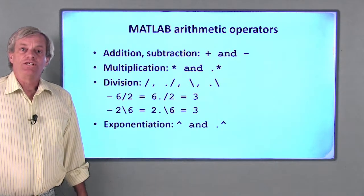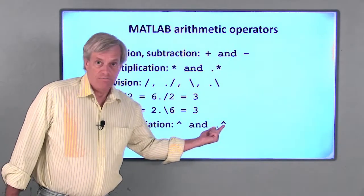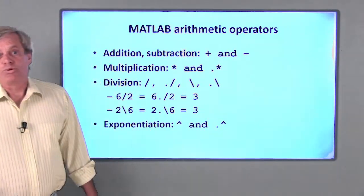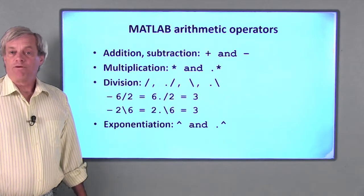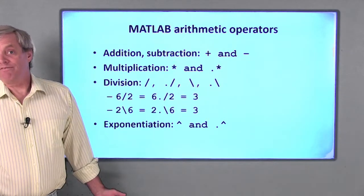Finally, exponentiation is done with a caret symbol or a dot and then the caret symbol. For scalar operands, both of these operators perform identical operations. For arrays, as you might have guessed, they don't.